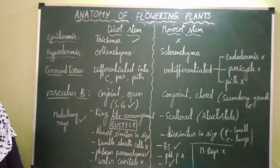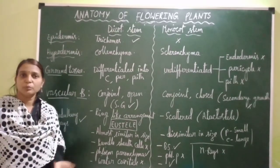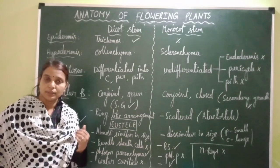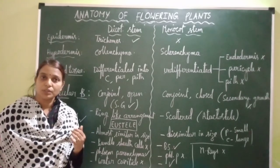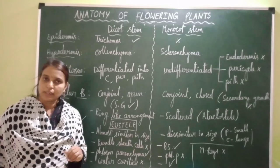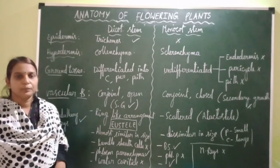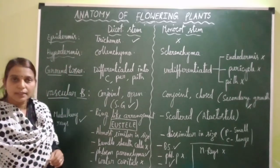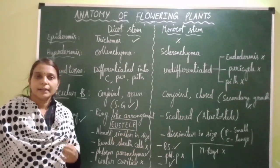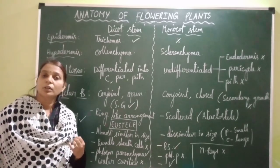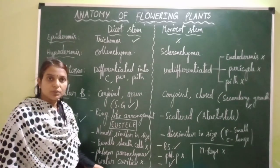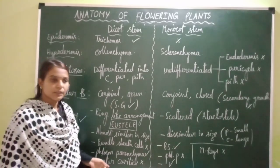This is all about the differences between dicot stem and monocot stem. In the next video, I will be starting with the transverse section of leaves — that is, dicot leaf and monocot leaf. After studying that, we'll make the differences between dicot leaf and monocot leaf, and even between stem and root. Hope you understood all these concepts. Thank you, students.